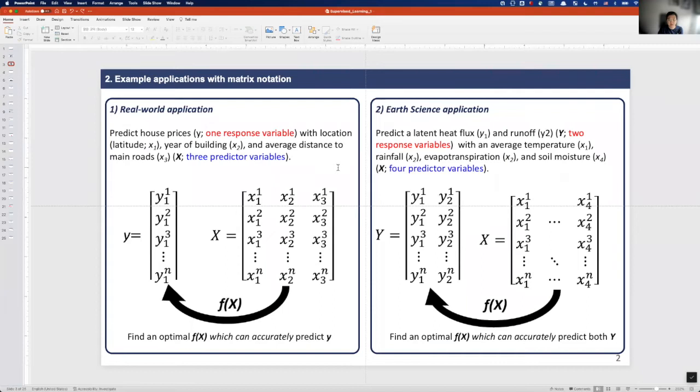Same as the left side, we want to find the function f which can accurately predict latent heat flux and runoff at the same time.